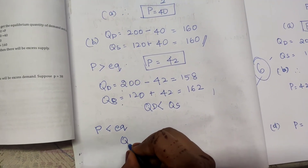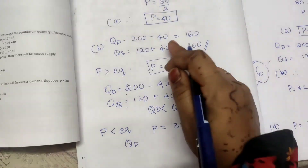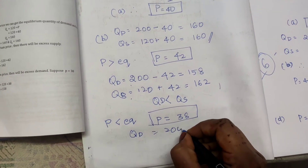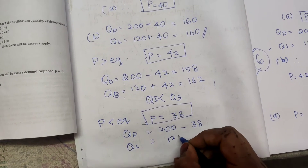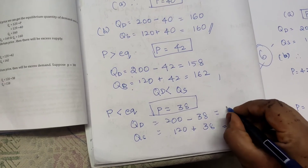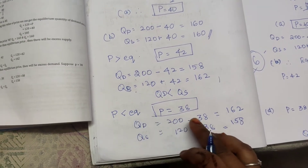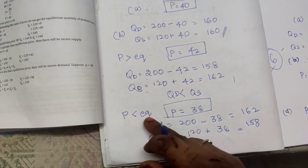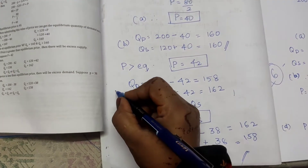Now when the price is lesser than equilibrium price, we apply the same formula but take price as 38. Quantity demanded equals 200 minus 38, which equals 162. Quantity supplied equals 120 plus 38, which equals 158. We can see that when price is less than equilibrium price, demand is more and supply is less — quantity demanded exceeds quantity supplied.